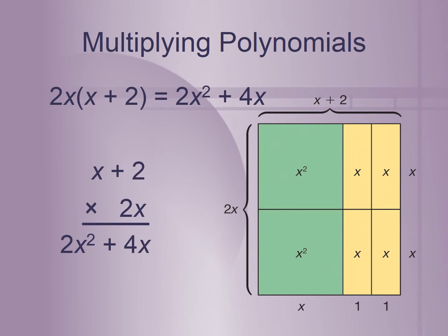To show this vertically: x plus 2 times 2x. You do 2x times 2, that's 4x. Then 2x times x gives us 2x squared. So the result is 2x squared plus 4x.